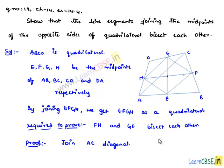If we join AC diagonal and consider triangle DAC. In triangle DAC, H is the midpoint of AD and G is the midpoint of DC. Therefore, by midpoint theorem we can say that GH is parallel to AC and also GH will be equal to half AC. Let this be equation number 1.